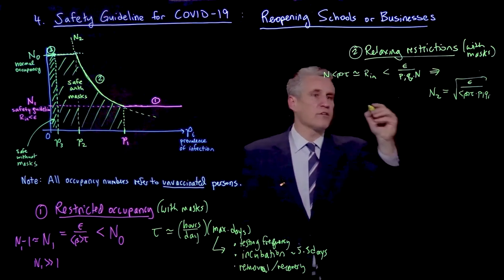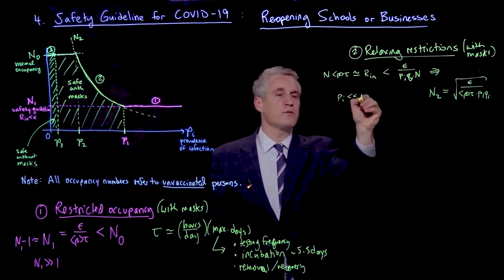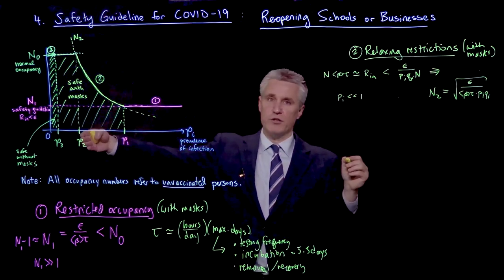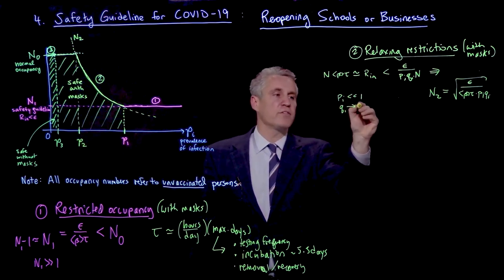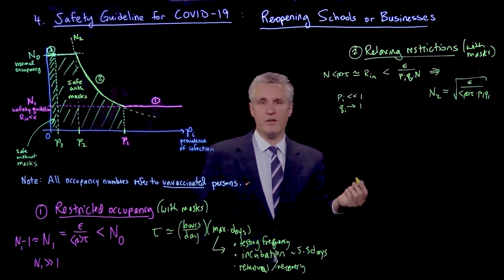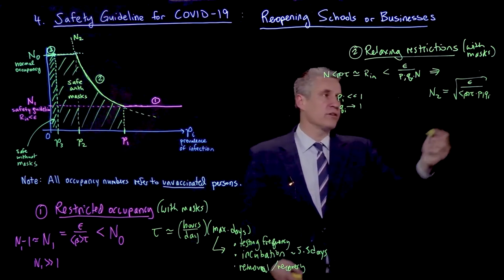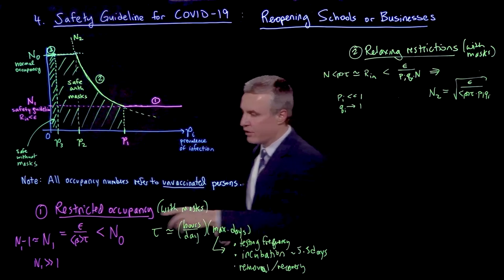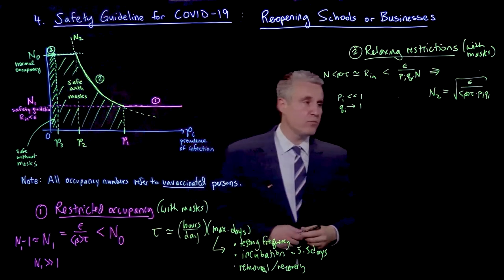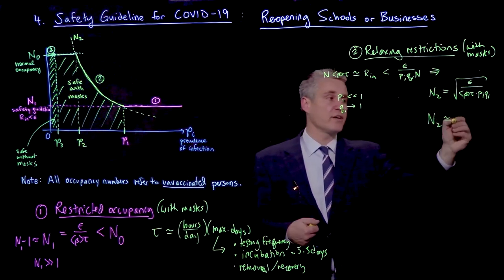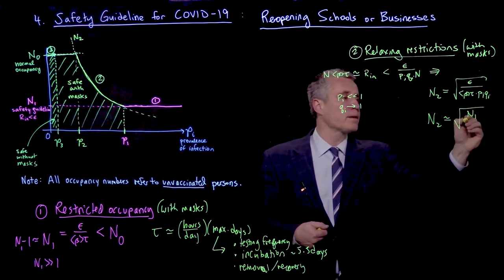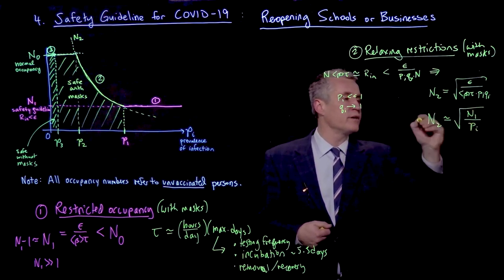So I'll get my n2 then would be the square root of epsilon over beta tau times pi times qi. And I remember also another approximation here is that pi is definitely much less than 1. We're looking at a limit of very low prevalence. And so also, therefore, qi is basically tending to 1 because it's 1 minus pi. And so that factor is really not that important. And notice, also, epsilon over beta tau, that's n1. So n2 is approximately related to n1 by the square root of n1 divided by pi.